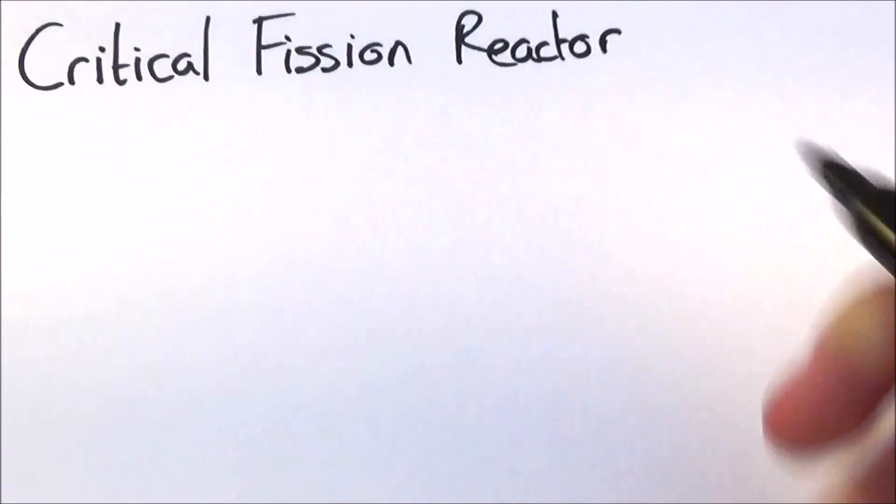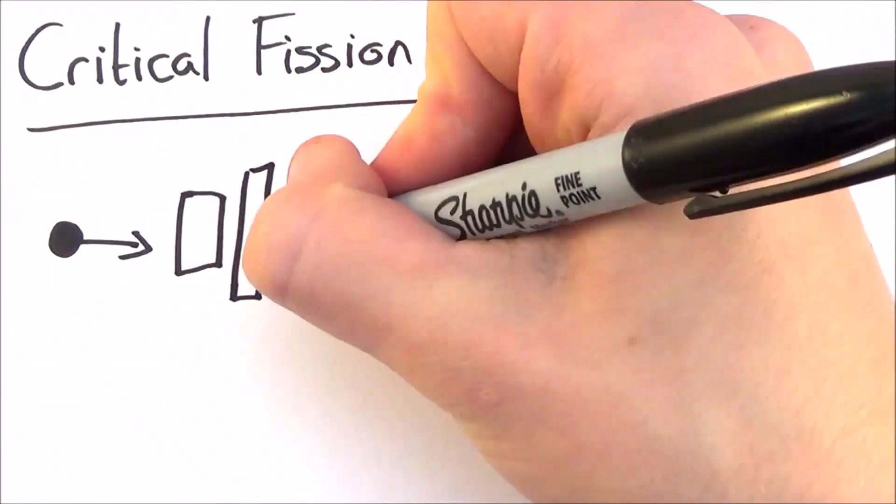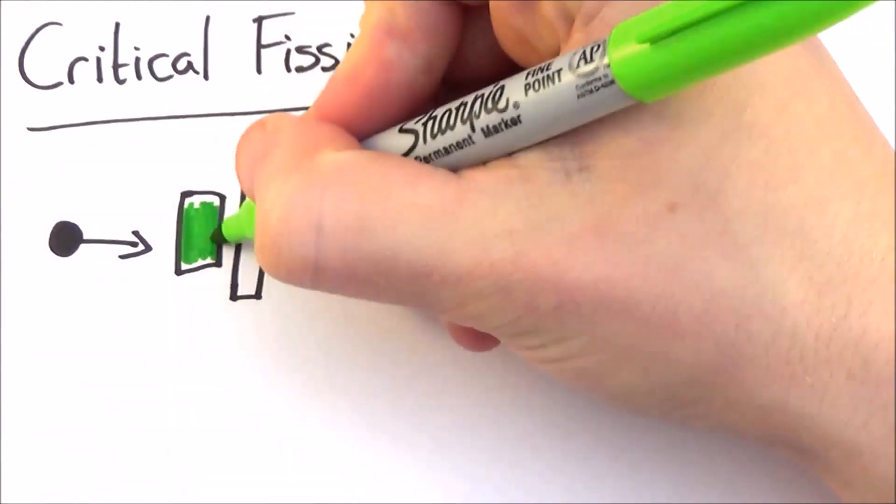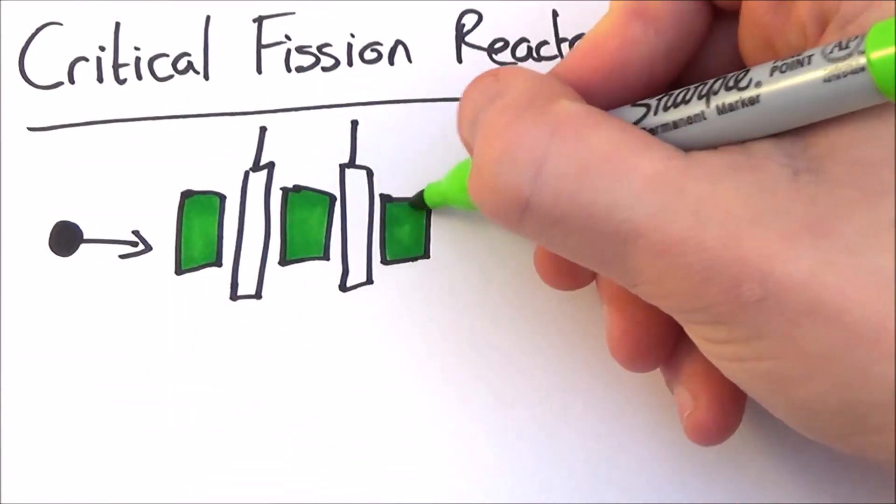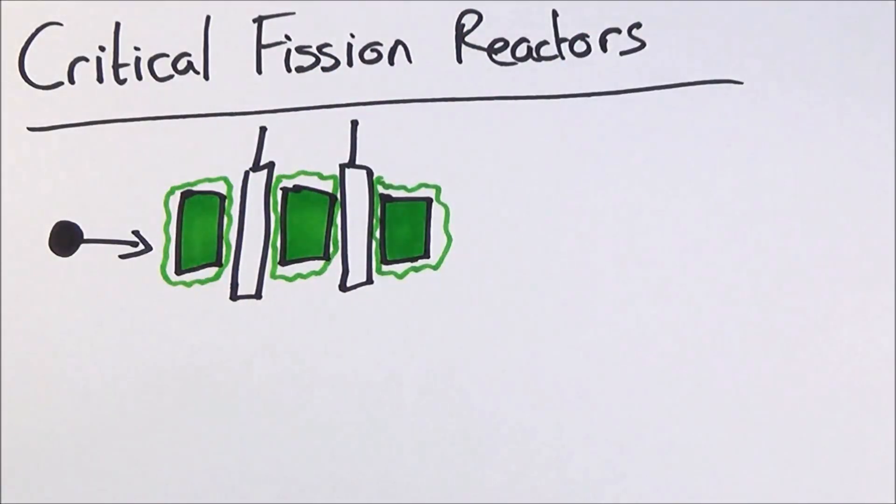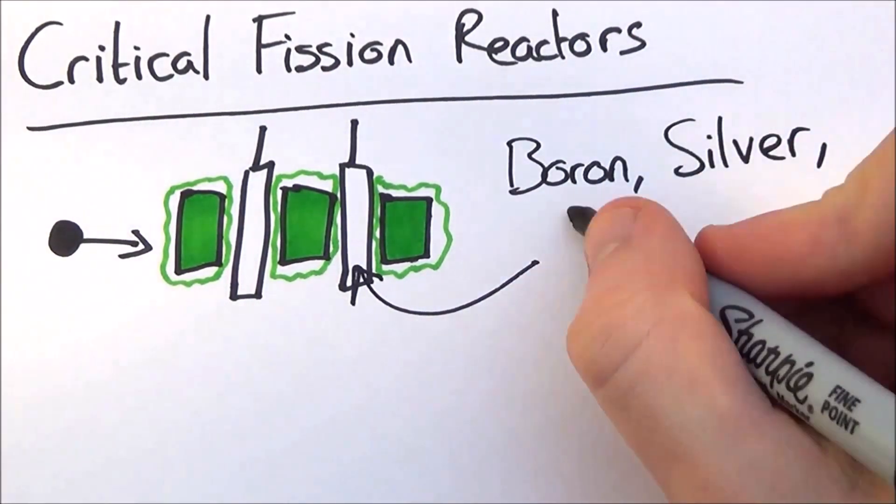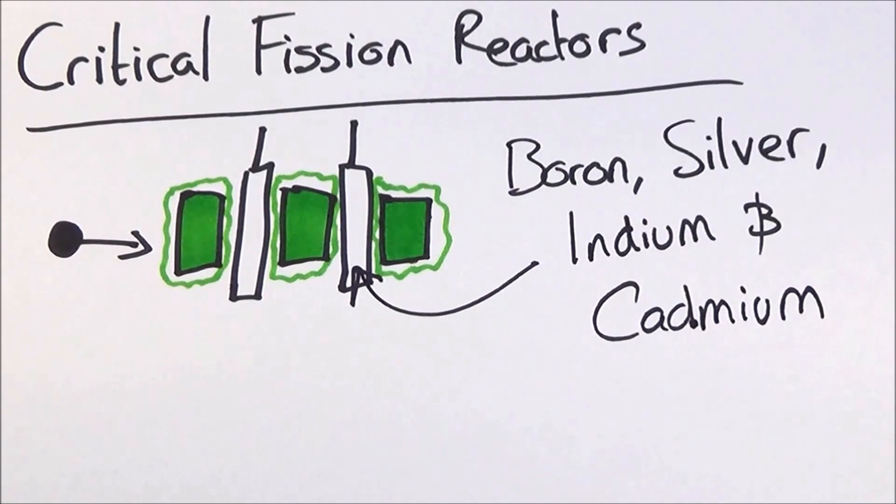Speaking of reactors, a critical fission reactor is the most common type of nuclear reactor. These work by inducing fission by adding neutrons into the mix and let them fuel themselves. They can be controlled using control rods, which are made of components of boron, silver, indium and cadmium to limit how many neutrons can move around. This in turn limits how many reactions can be taking place at once.